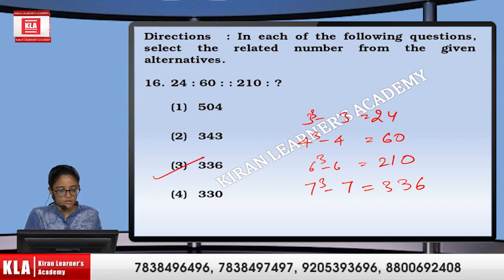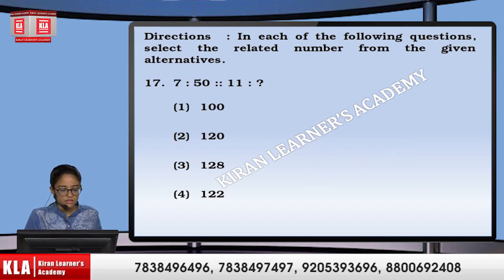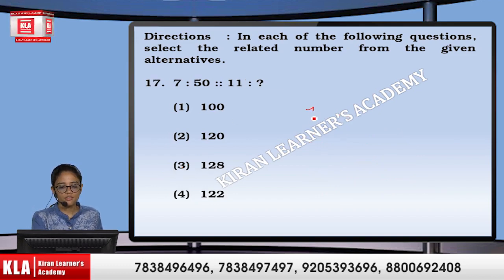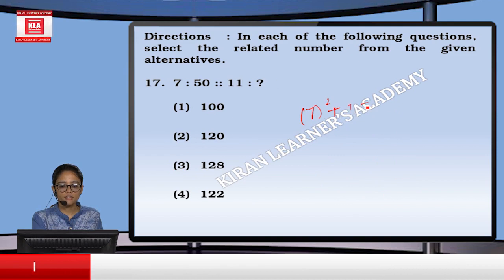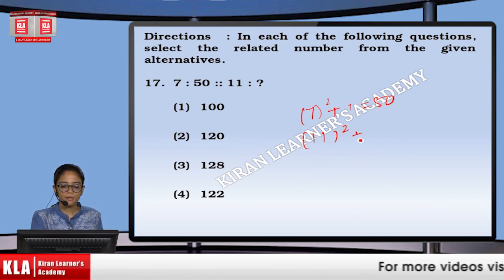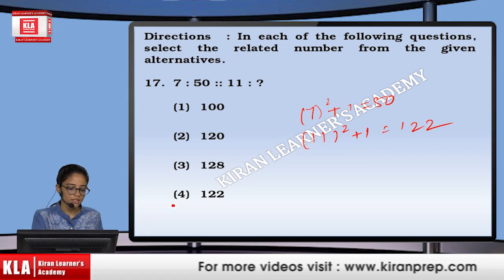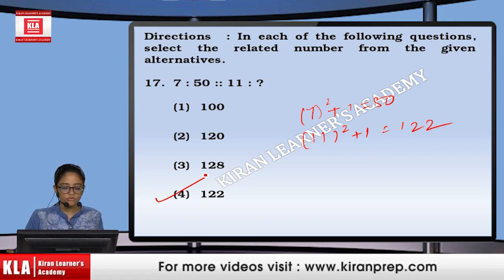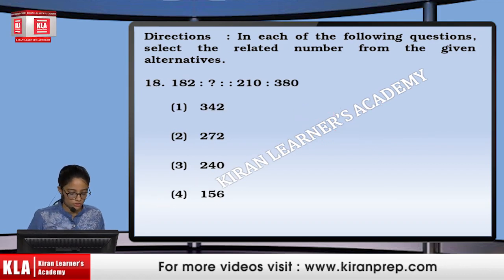Next, 1 is to 50. So, 7 cubed plus 1 will give us 50. Wait — similarly, 11 cubed plus 1 will give you 1,332. That means option number 4.